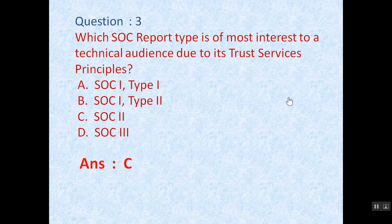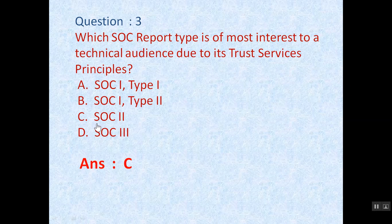For question number 3, we know that trust principles are applicable to SOC 2 and SOC 3 only, so options A and B are ruled out. SOC 3 is an unrestricted report, so option D is also ruled out. SOC 2 report is available to a technical audience. Hence the correct answer is C.